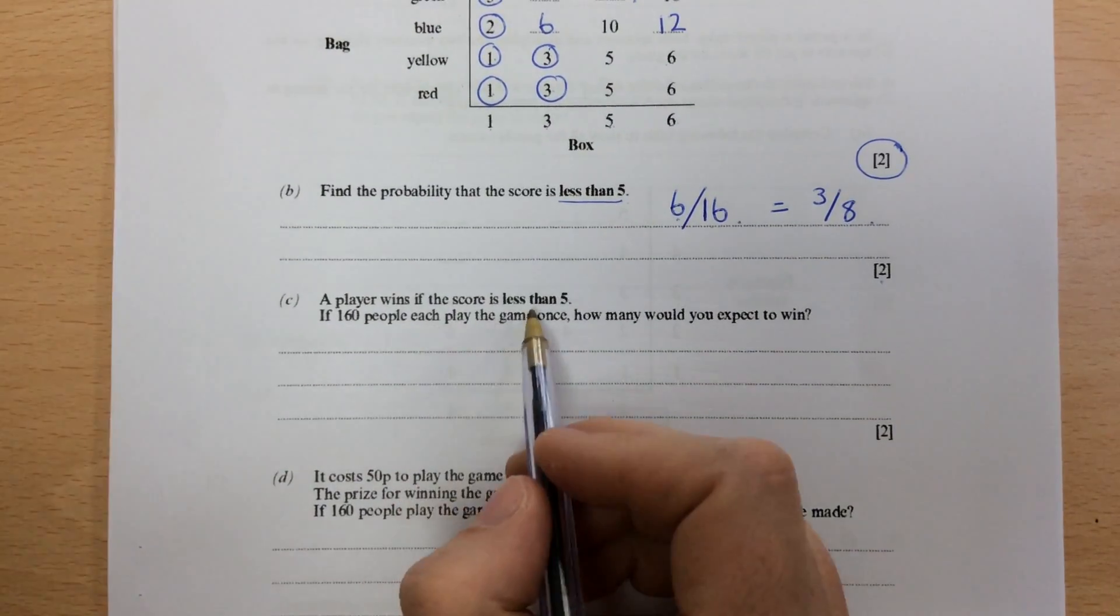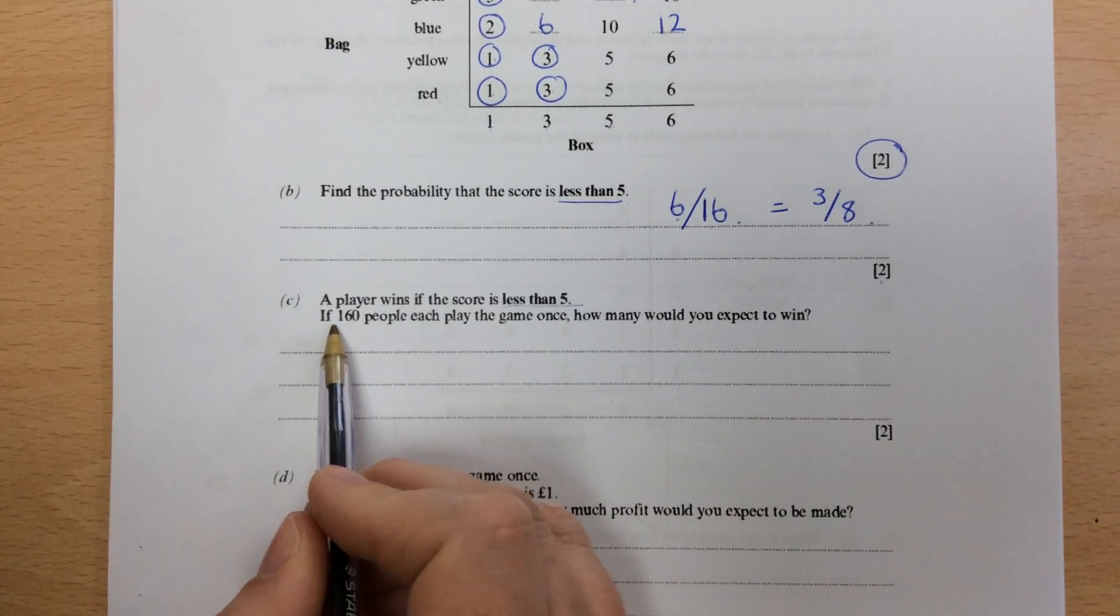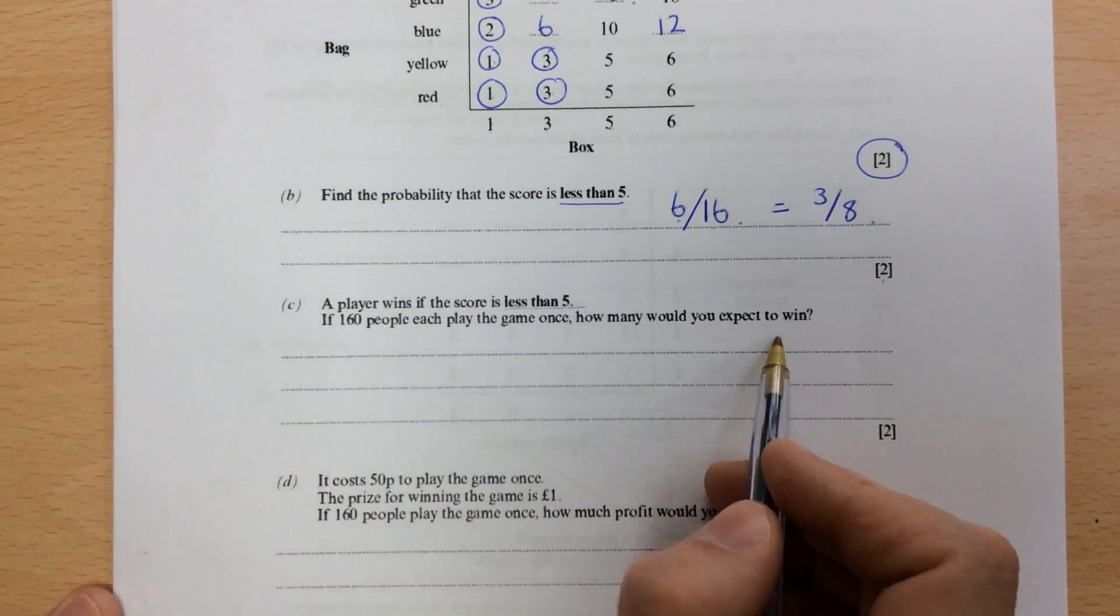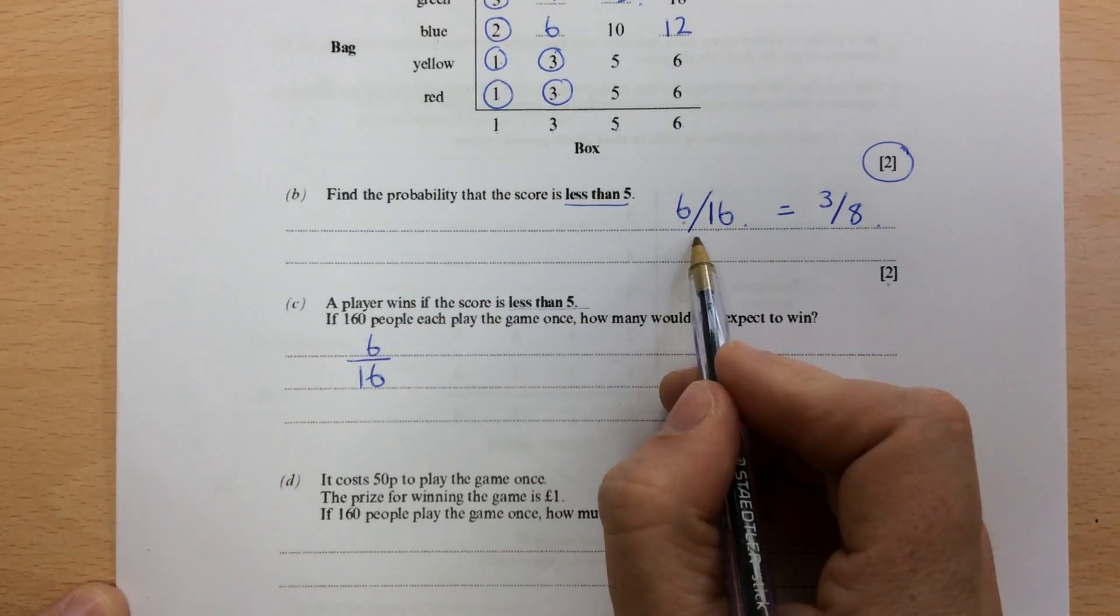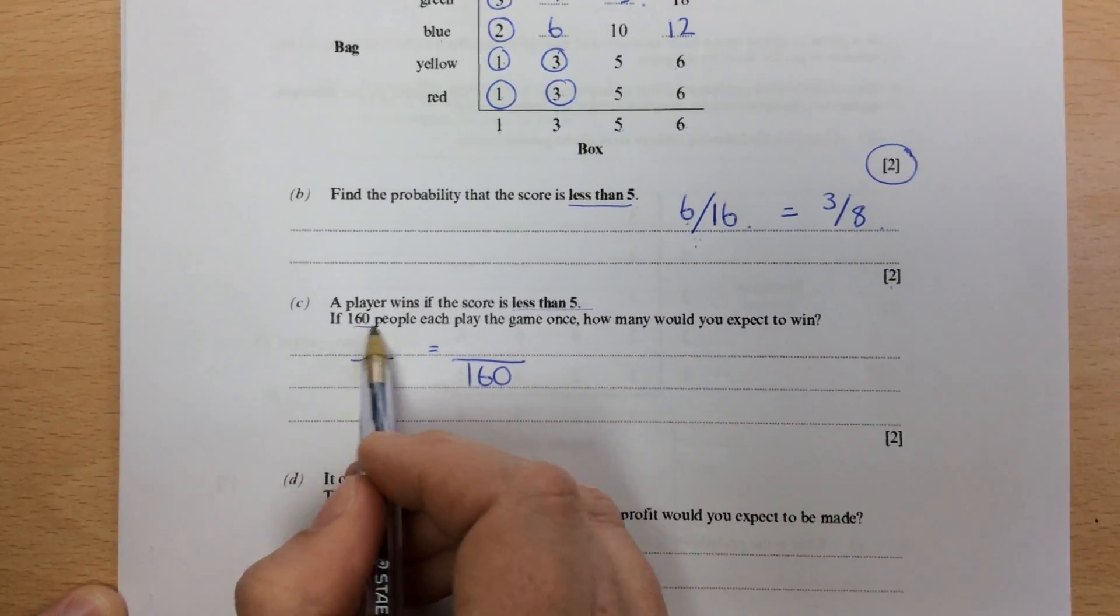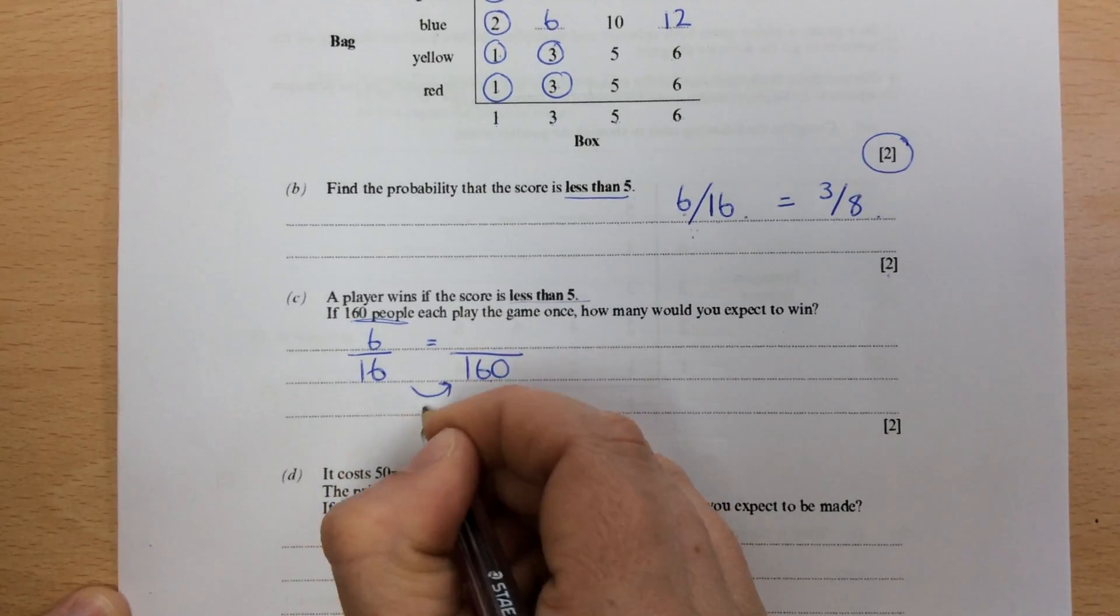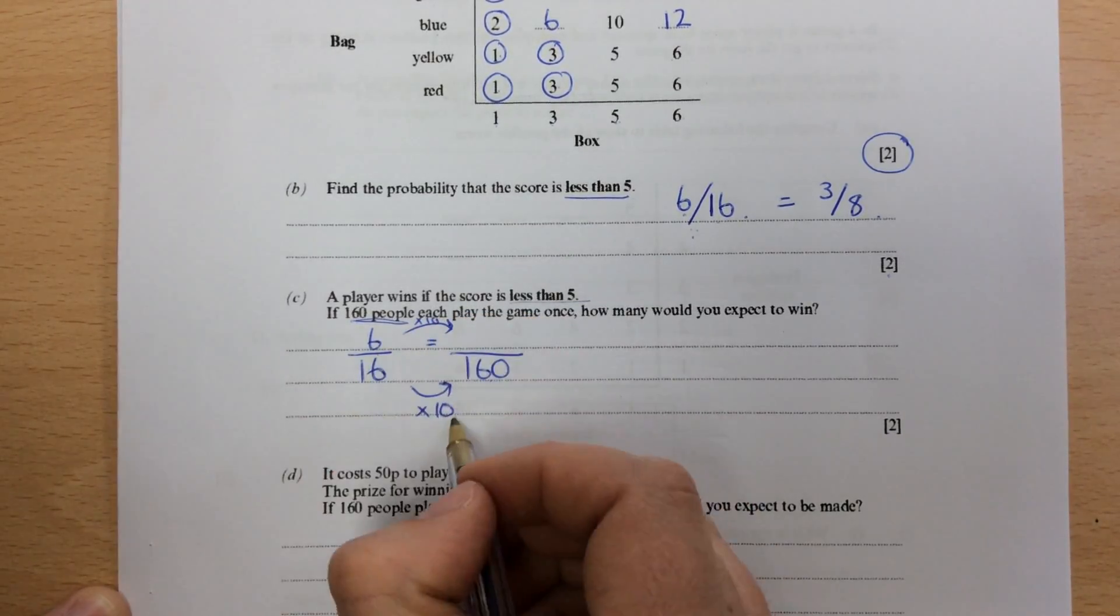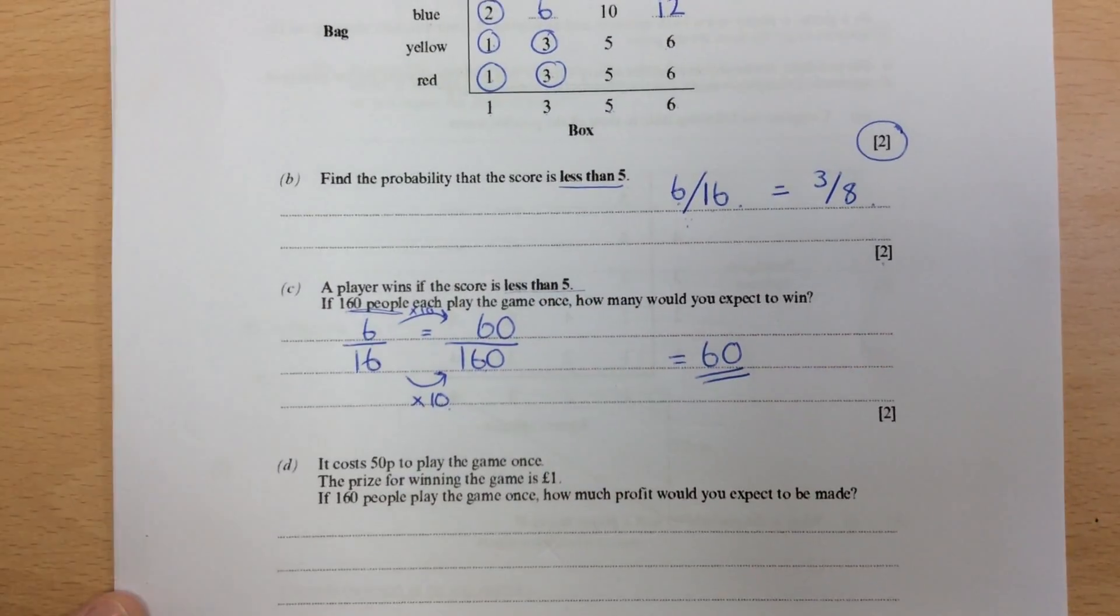Now a player wins if the score is less than five. If 160 people play the game once, how many would expect to win? So to win is six out of sixteen. We just did that in the first part. We want out of 160 people. So 16 to 160, I times by ten. So I must do the same to the top. So six times ten is sixty. So I would expect 60 people to win.